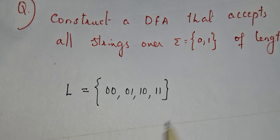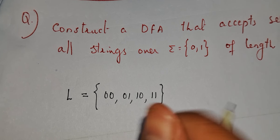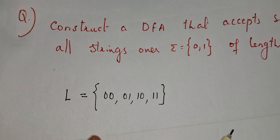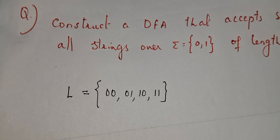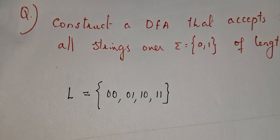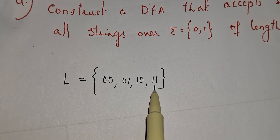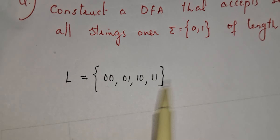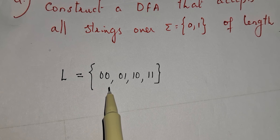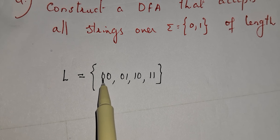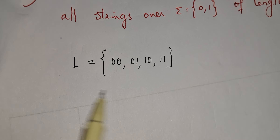Using 0 and 1 of length 2, you can generate the strings: 00, 01, 10, and 11. This is a finite language. After writing the language, the next step is to draw the skeleton for the smallest string. Here, all strings have length 2.